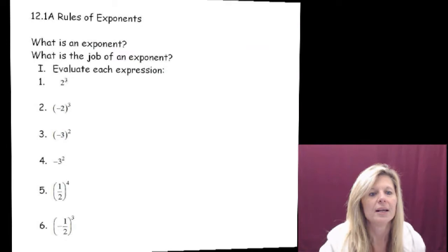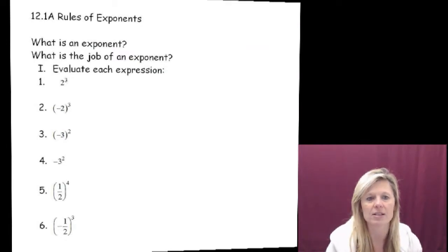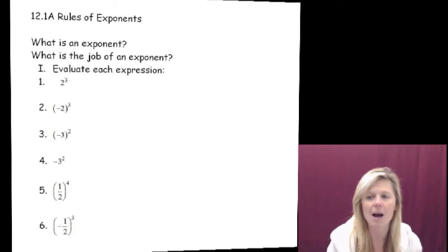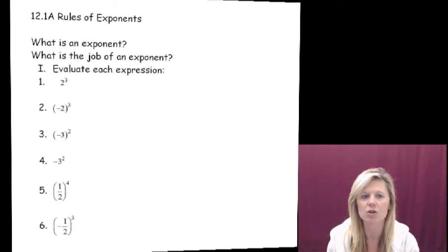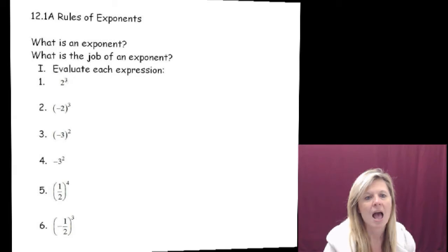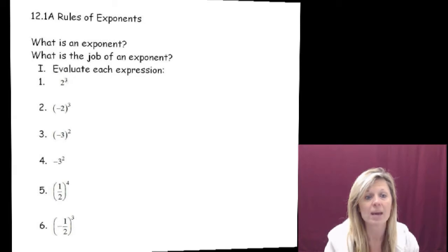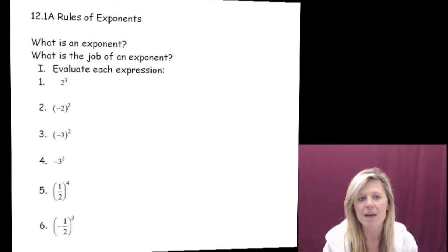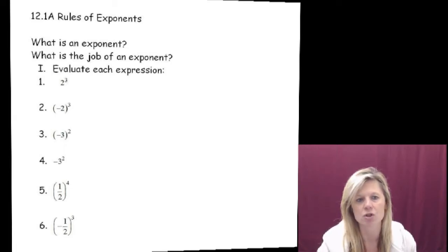Today we are going to talk about multiplication of numbers and also of algebraic expressions and variables. Looking at the class notes, we are going to start off talking about exponents. Exponents are the little superscripts on top of numbers, and the job of the exponent is to do repeated multiplication. That number the exponent is connected to is called the base. So when we have 2 cubed, that means we take the base 2 and multiply it 3 times: 2 times 2 times 2, which gives you 8.